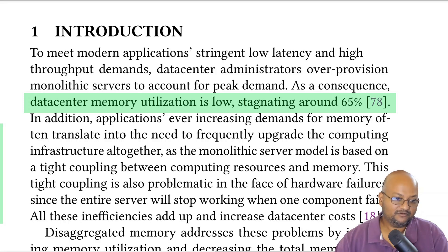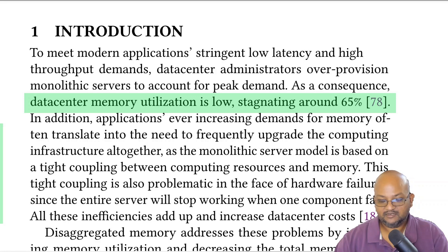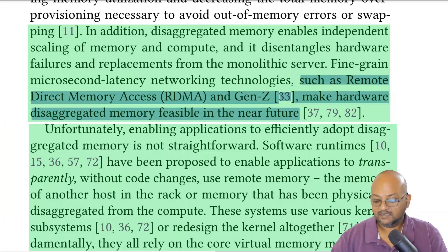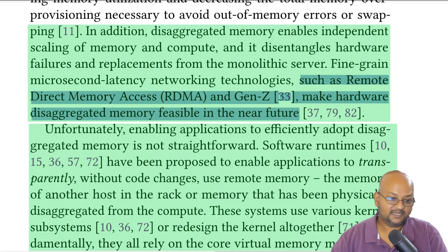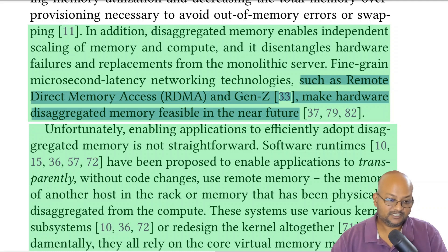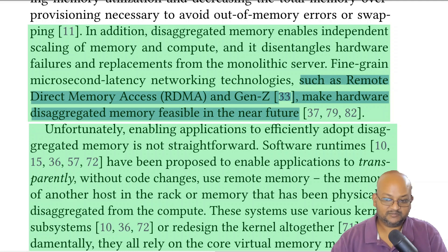That still leaves RAM and CPU largely still coupled together. As they point out, average data center memory utilization is pretty low — around only 65% — so we'd like to start being able to use disaggregated RAM. Recent hardware advances like remote DMA have started to make that feasible. The open question is what kind of abstractions operating systems, runtimes, and applications can actually use to directly access remote RAM.